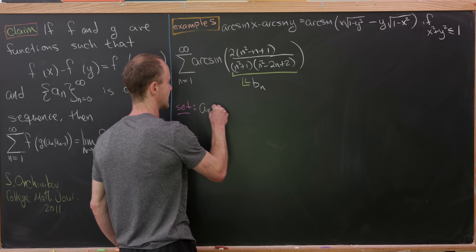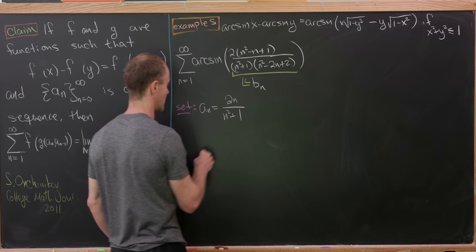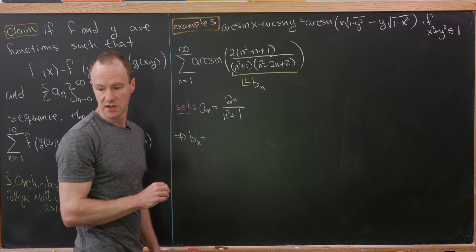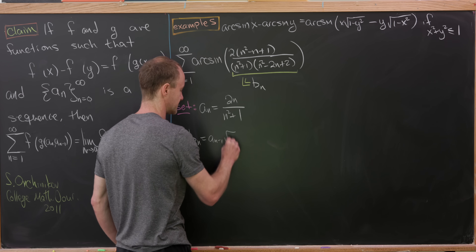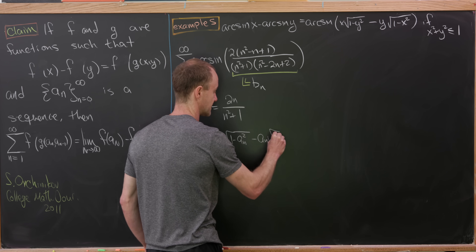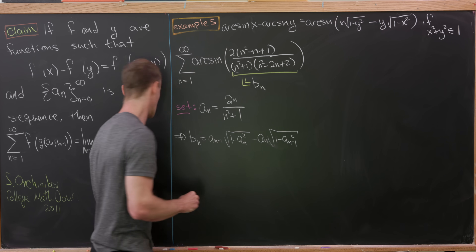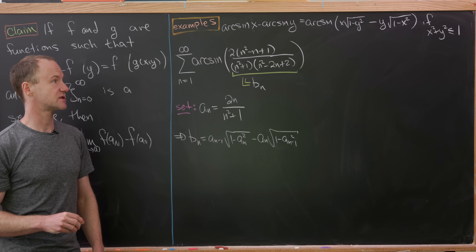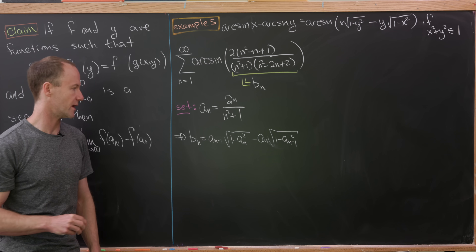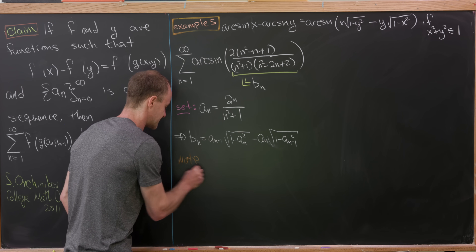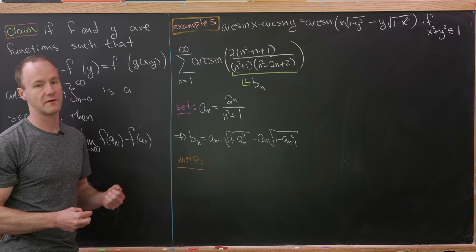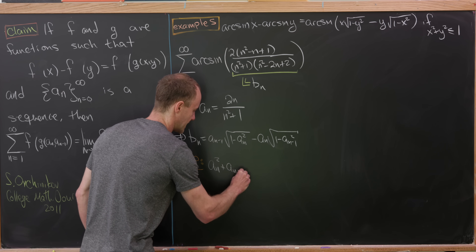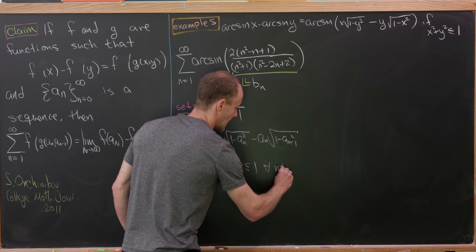If you set a sub n equal to 2n over n squared plus 1, then B sub n equals a_{n-1} times sqrt(1 minus a_n²) minus a_n times sqrt(1 minus a_{n-1}²). The inverse sine identity only works if x squared plus y squared is less than or equal to 1, so we need to note that a_n squared plus a_{n-1} squared is less than or equal to 1 for all n not equal to 2. That means we have to split this sum into separate pieces.